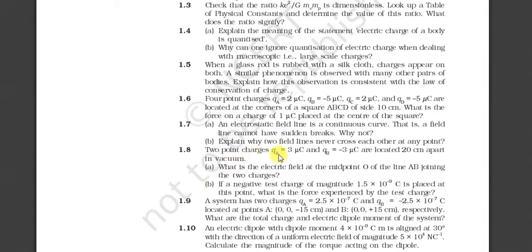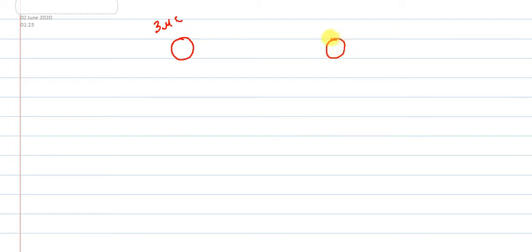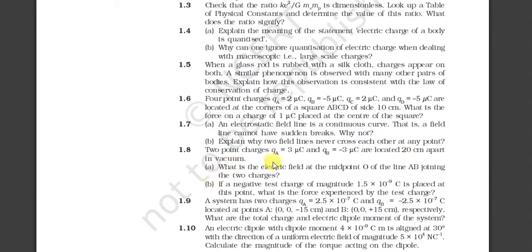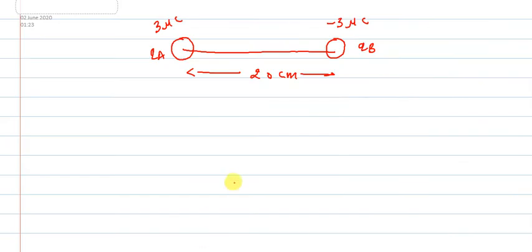Let's make a diagram: we have +3 microcoulomb charge at point A and -3 microcoulomb charge at point B, with a distance of 20 cm between them. This is qA and this is qB. The question asks for the electric field at the midpoint O of the line joining A and B, so we need to find the electric field at that midpoint.